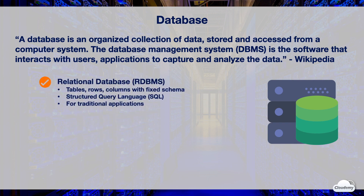Relational Database, or RDBMS, comprises tables of rows and columns. Each row is a record; each column is a field or data attribute. A table looks like a spreadsheet with rows and columns. Relational Database requires a fixed data schema, which means you have to define a fixed number of columns with predefined data types when you create the table — for example, whether a column should be numeric, string, or datetime type. RDBMS can only store structured data.